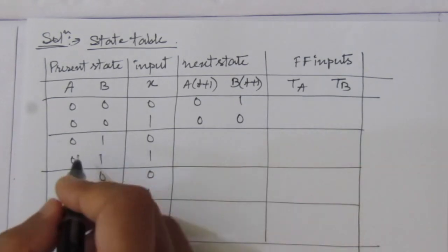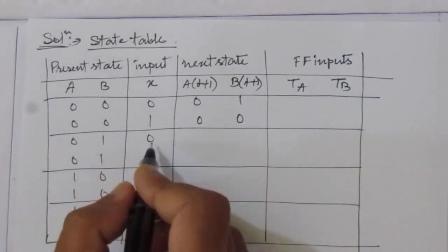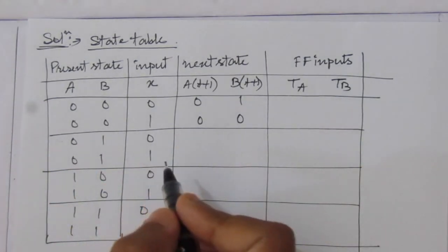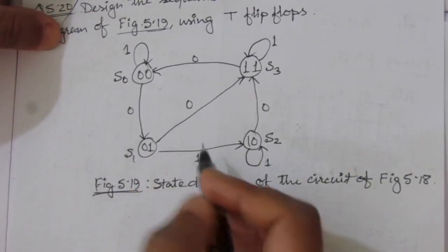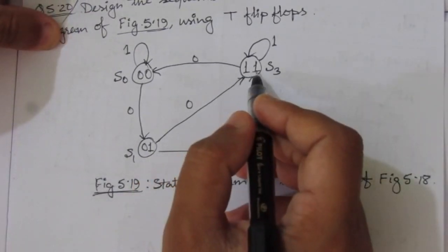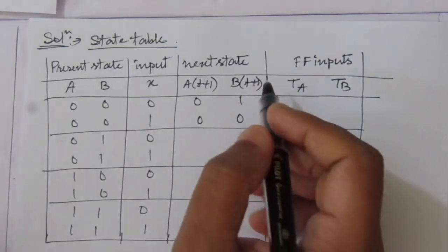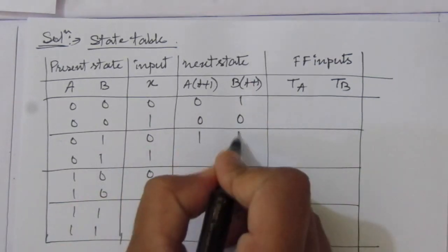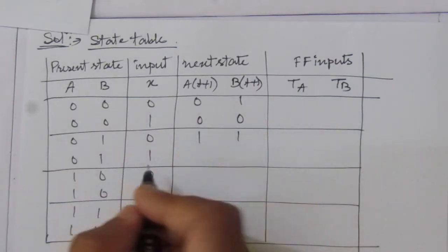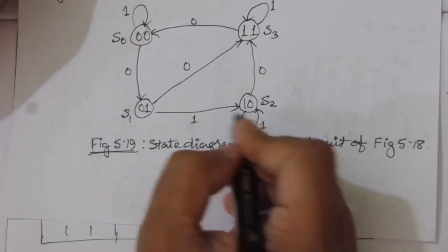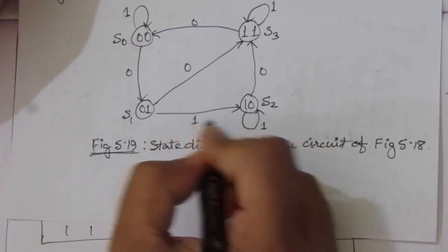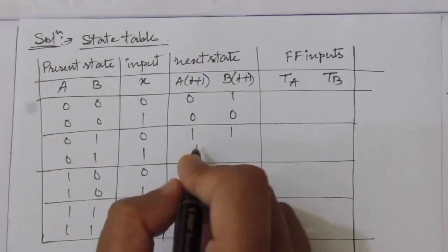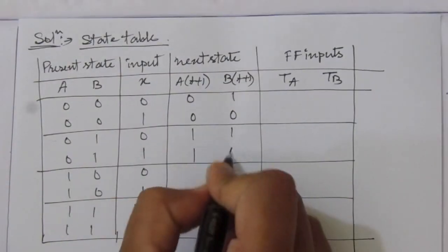Next, the present state is 01 with inputs 0 and 1. From state 01, when input is 0, it goes to next state 11. When input is 1, it will go to state 10.